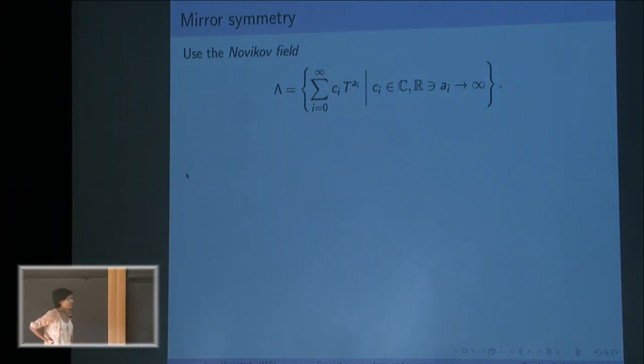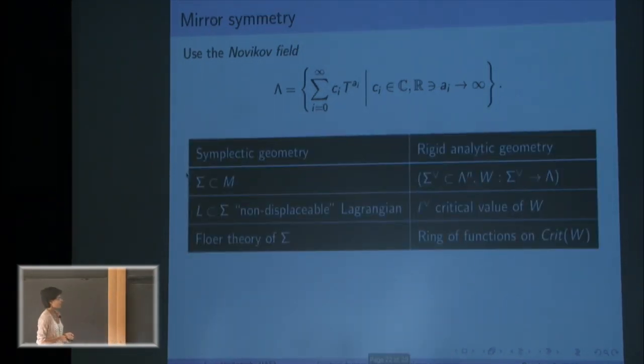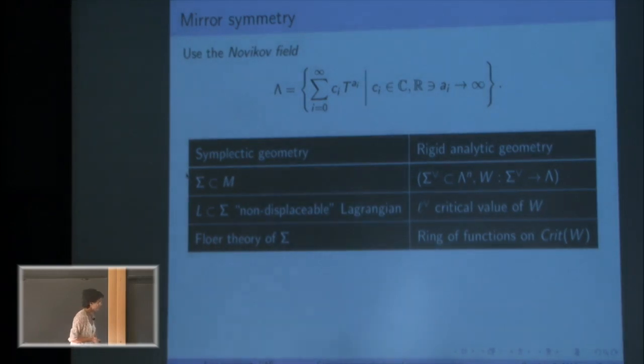This is kind of baffling. But it turns out that if I work over this field, my crystal ball of mirror symmetry tells me some interesting things. So here's my black box. Mirror symmetry tells me that bizarrely I should be able to relate my hypersurface to a subset of this vector space equipped with some function.